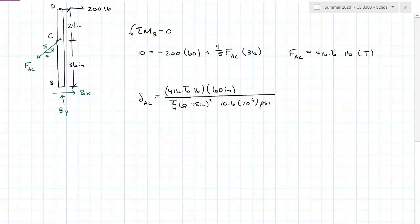My axial deformation in member AC due to the 200 pound force is 5.34 times 10 to the negative 3 inches, and that is elongation because our force is in tension and that's going to cause it to stretch out.